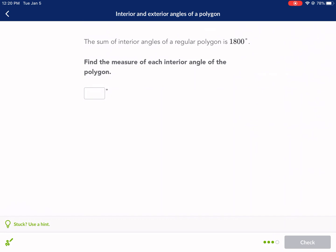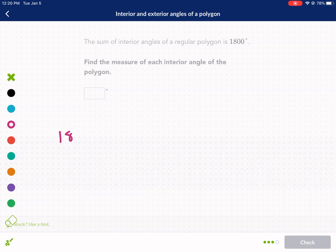Last problem. The sum of interior angles of a regular polygon is 1,800. So I know that's n minus 2 times 180. And we want to find the measure of each interior angle of the polygon. So the first thing I need to do is find the number of sides. So I'm going to find n first. So I divide by 180.